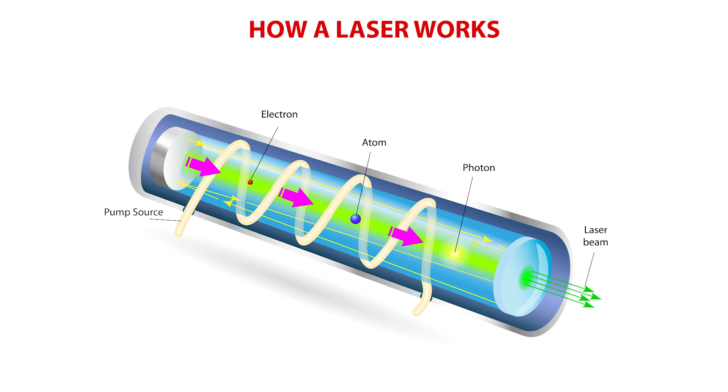The pump source provides energy to the overall laser system. These can come in the form of electrical discharges, flash lamps, arc lamps, light from another laser, chemical reactions, and explosive devices. The type of pump source used will usually be determined by the gain medium in place.